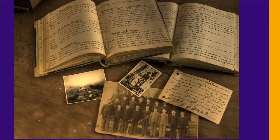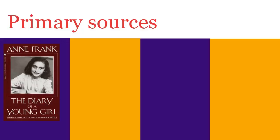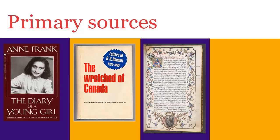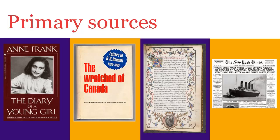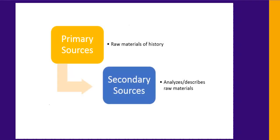Do you need primary sources for a history essay and are not sure just what they are or where to find them? Primary sources are records or objects that were created by participants or observers of an event. They include such items as diaries, letters, manuscripts, and newspaper accounts. They also include maps, speeches, photos, and videos. These items are the raw materials that historians use to analyze the past.